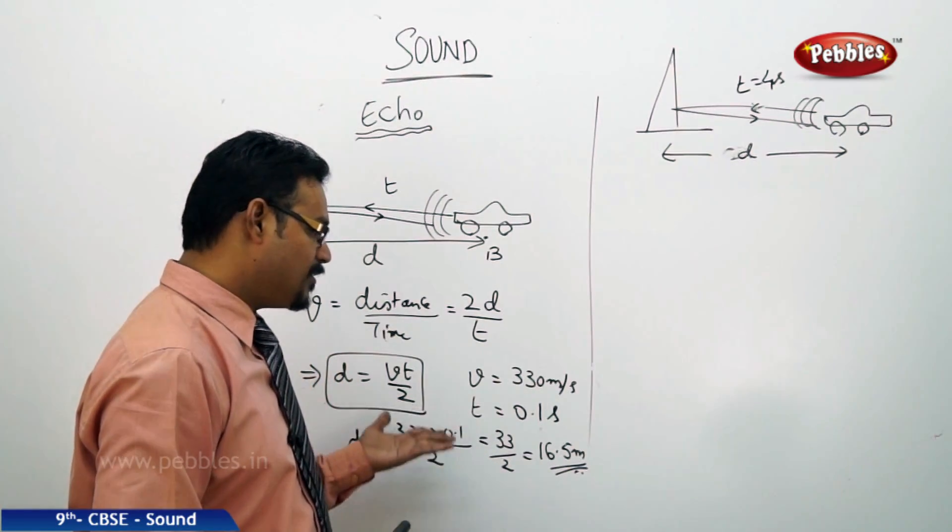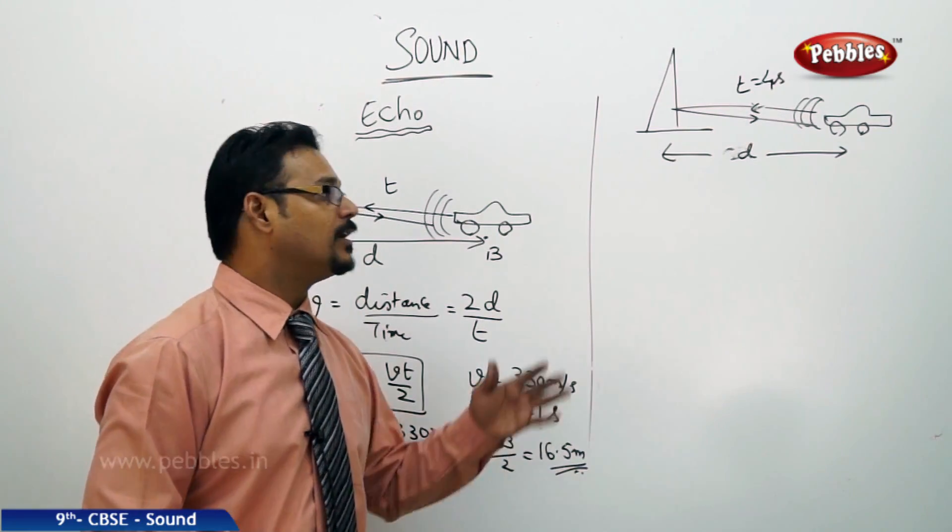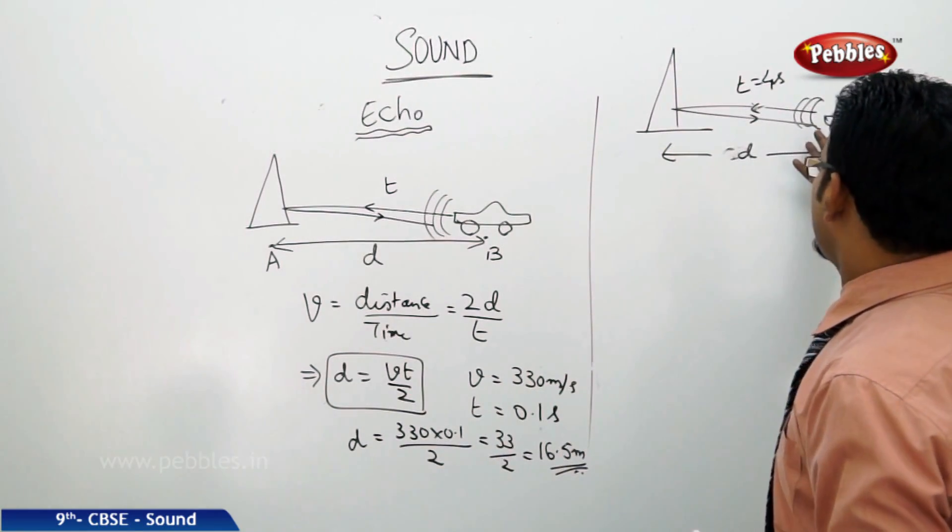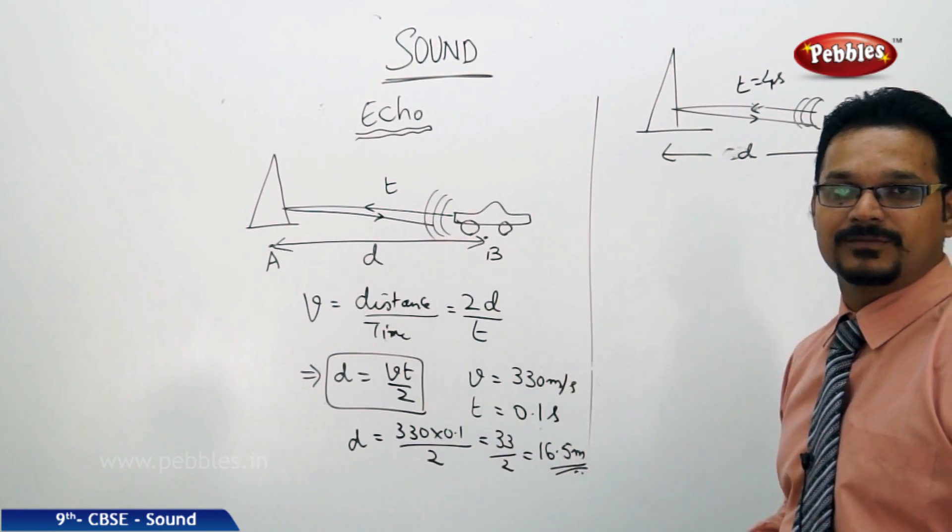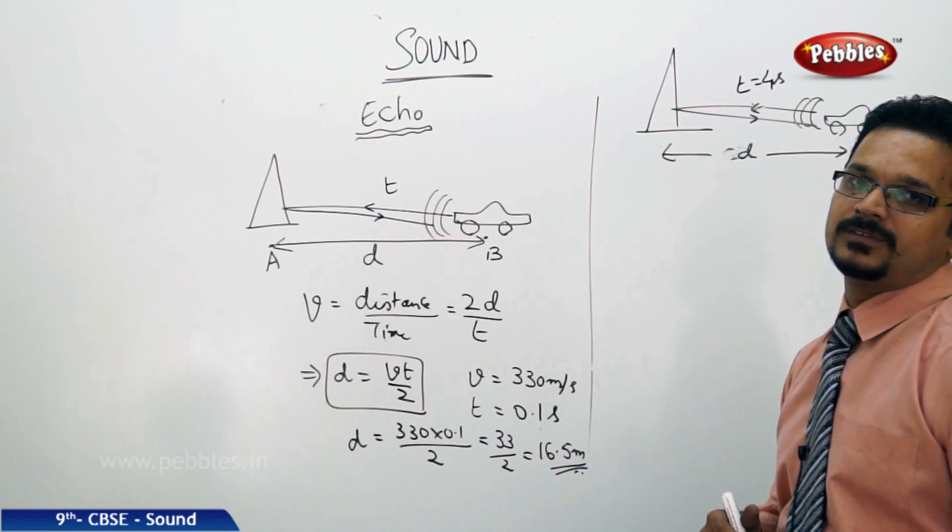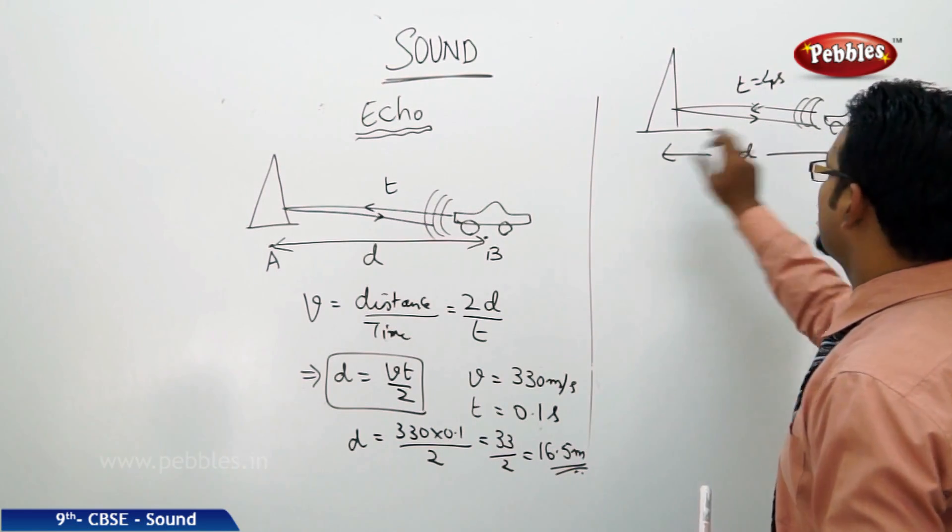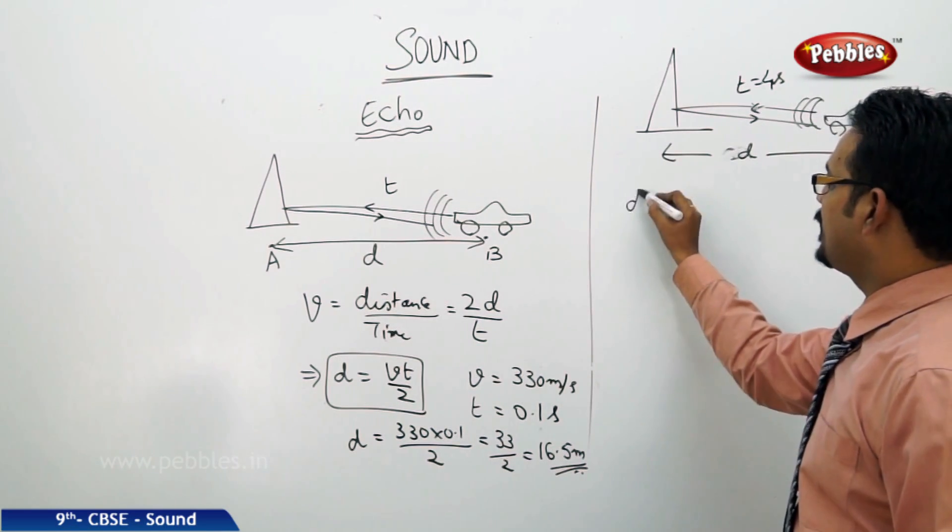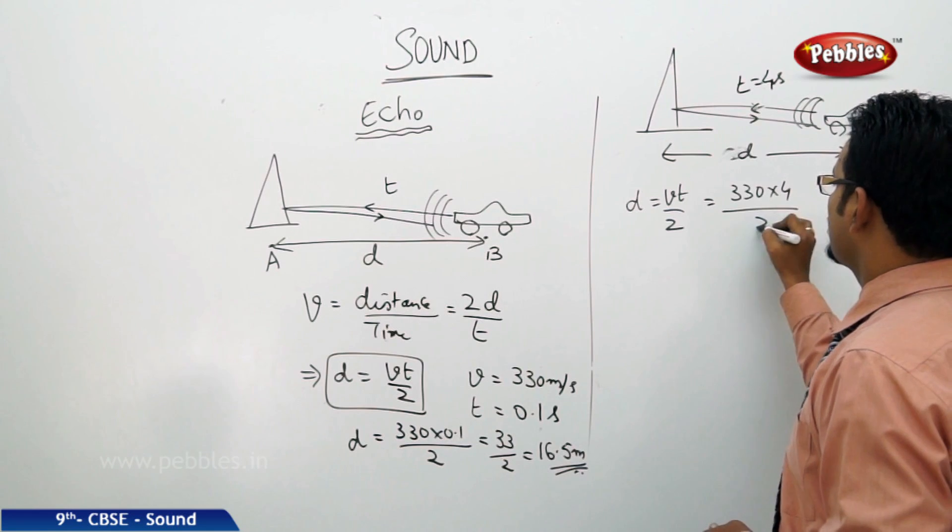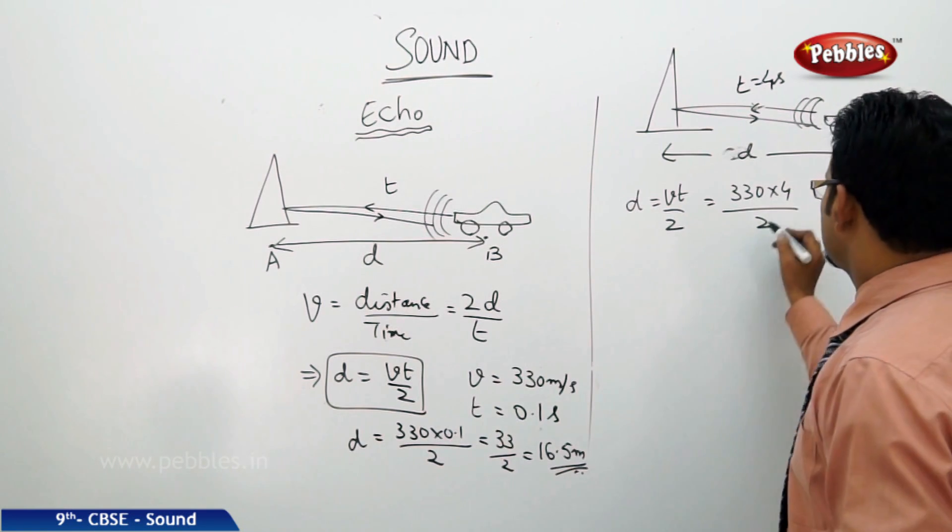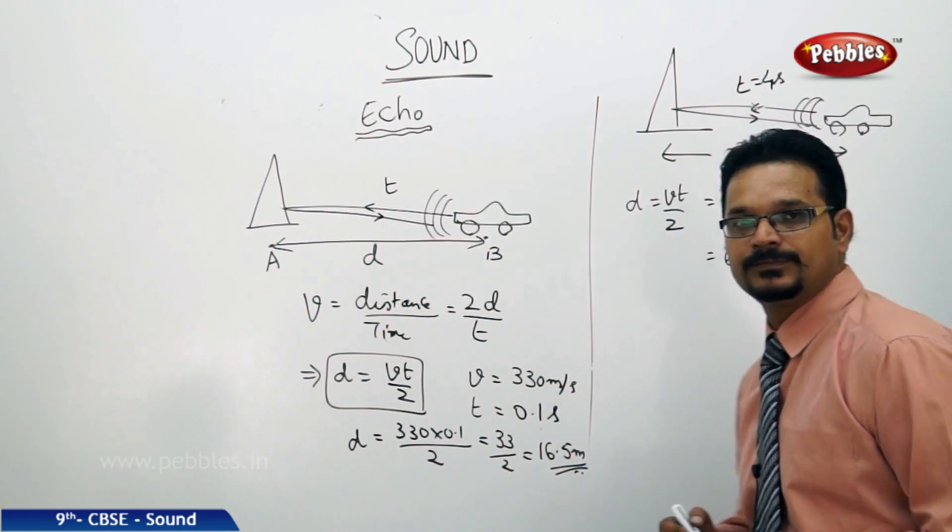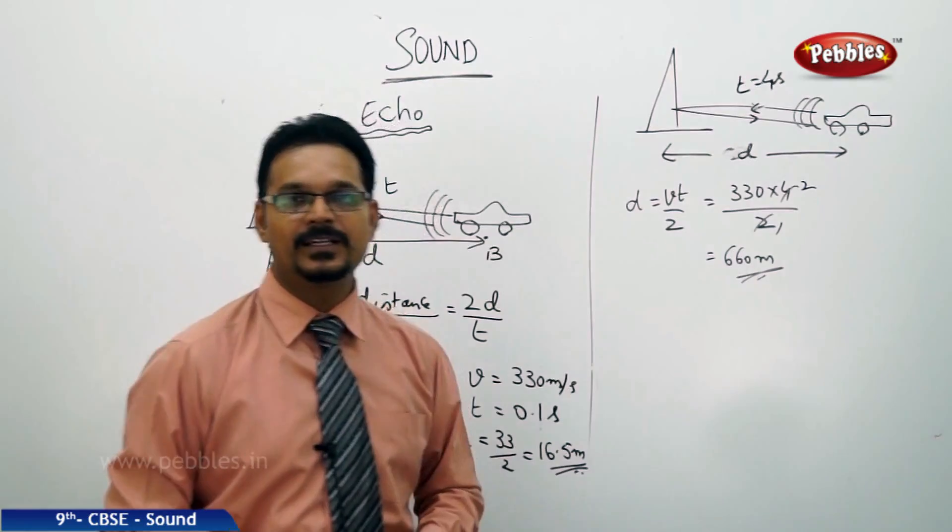We have considered that minimum distance is 16.5 meters. Now let us do a numerical. See here, there is a peak. The car produces the sound, blows the horn, and after 4 seconds he heard the echo. You need to calculate the distance between the car and the peak. Write the formula: d equals vt by 2. v is 330, time is 4, by 2. This is nothing but 660 meters.